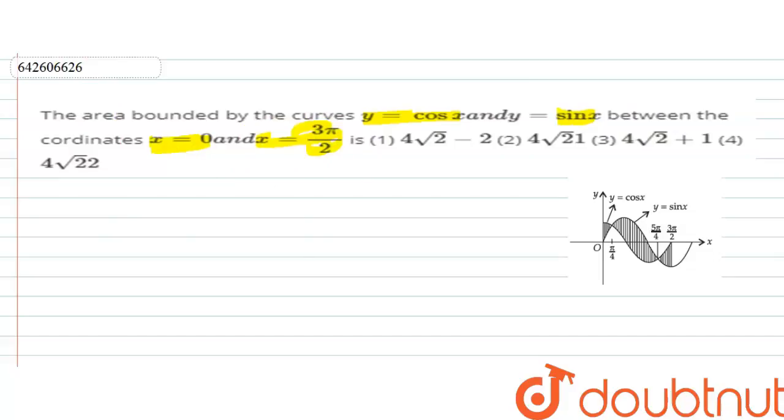And we have to choose the correct option from the given options. Now look at this graph. We have given x is equal to 0, this is 0 to 3π/2, and we have to find the area.